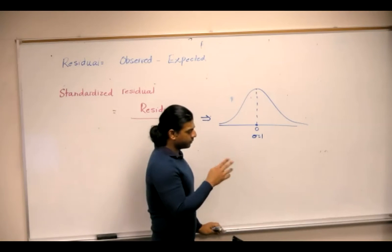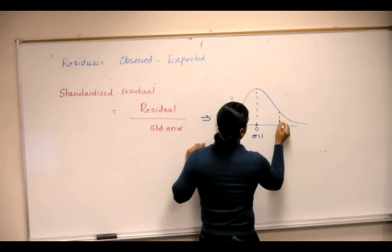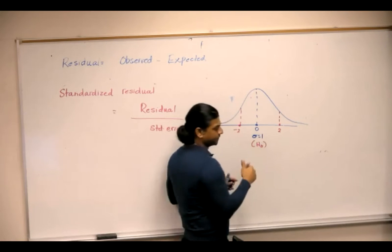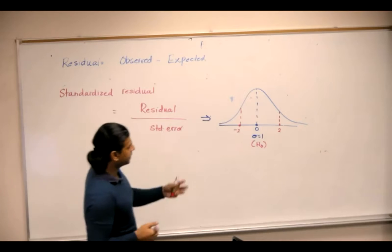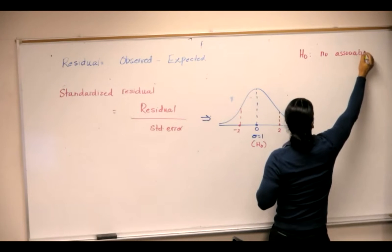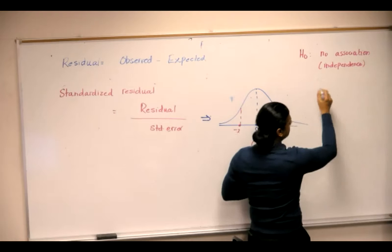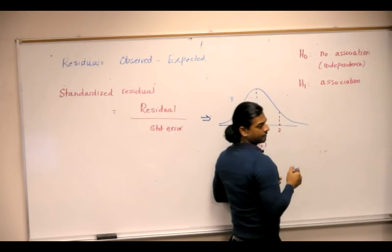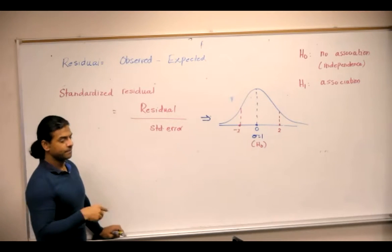Do you recall going one standard deviation on either side of the mean, two standard deviations on either side? In our test, by definition, the null means no association — or simply, independence. The alternative means there is an association: Y depends on X, so dependence.